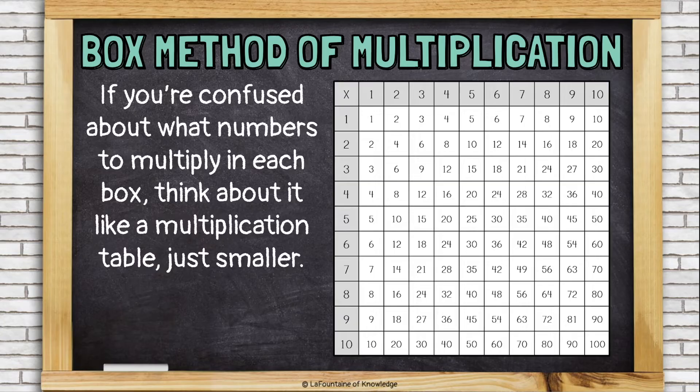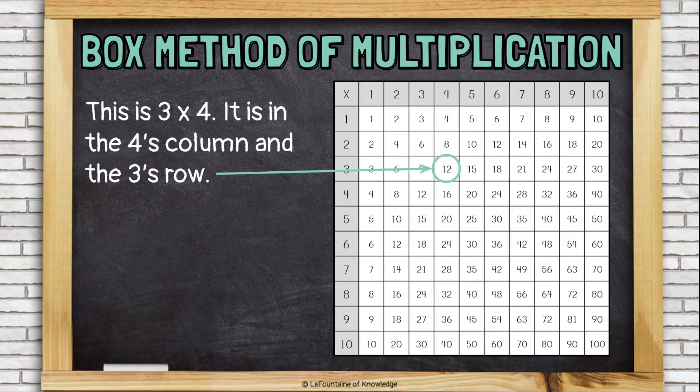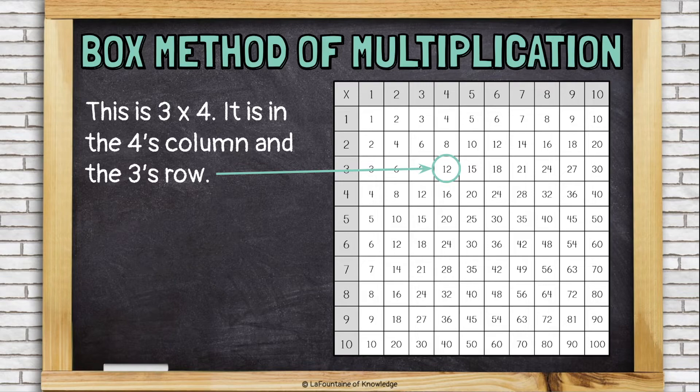So, if you're confused about what numbers to multiply in each box, think about it like a multiplication table, just smaller. This is 3 times 4. It's in the 4's column. It's underneath the 4. And it's in the 3's row. It's next to the 3. So, this is 3 times 4.